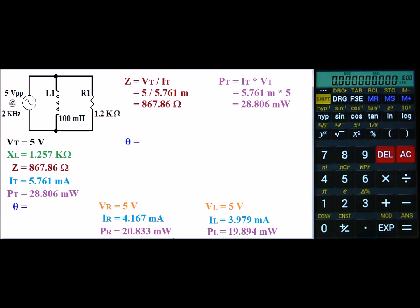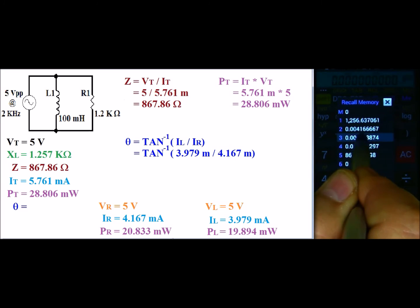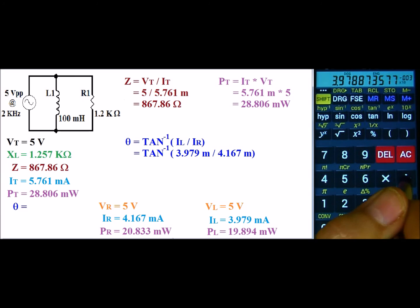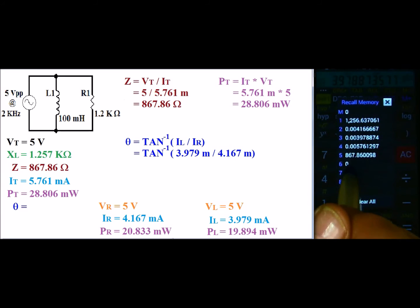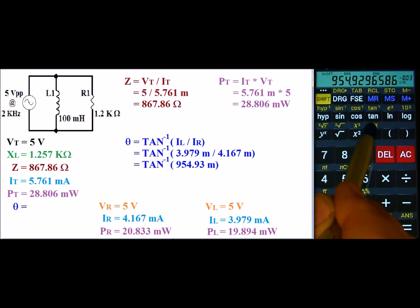Now our last step is to go ahead and find theta or our phase shift. Our phase shift is the inverse tangent of IL divided by IR. So that's the inverse tangent of 3.979 milli divided by 4.167 milli. So I'm going to go ahead and I'm going to recall my inductor current and divide it by my resistor current. And now I'm going to go ahead and hit the inverse tangent of it. And that gives us 43.68 degrees.